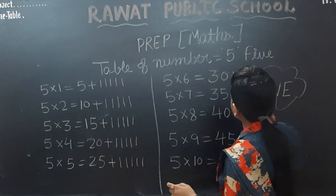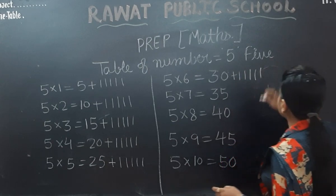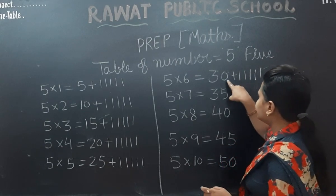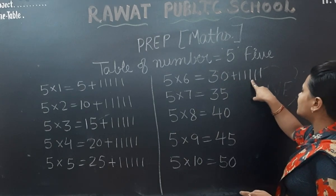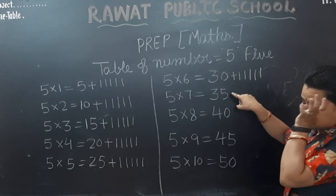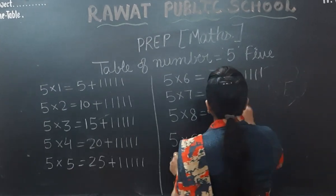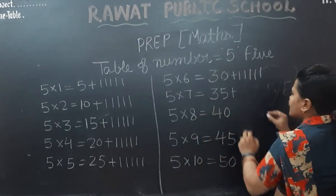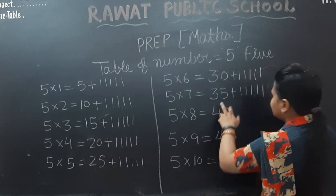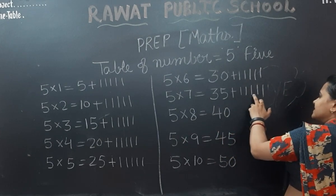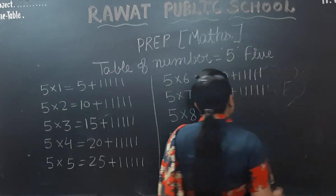Yes. 5 times 7, jump — 1, 2, 3, 4, 5. I must be plus 3. 5 times 7, jump — 13. 31, 32, 33, 34, 35. 5 times 7, jump — 35. 5 times 8, jump — 1, 2, 3, 4, 5. This will be 5 plus 3. 35, 36, 37, 38, 39, 40. 5 times 8, jump — 40.